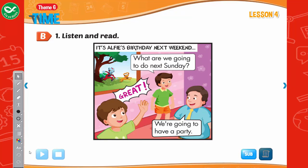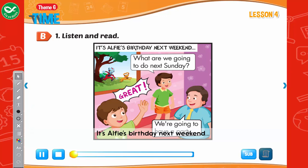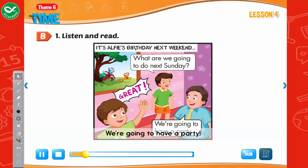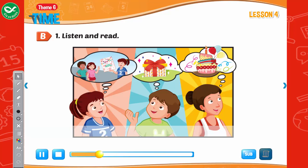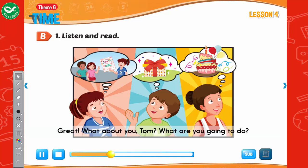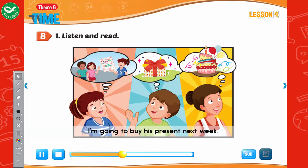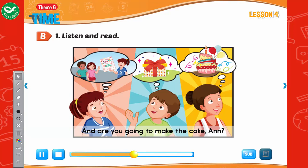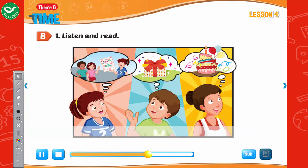Listen and read. It's Alfie's birthday next weekend. What are we going to do next Sunday? We're going to have a party. It's going to be great. What are you going to do, Lucy? I'm going to tell all of his friends tomorrow. What about you, Tom? I'm going to buy his present next week. And are you going to make the cake, Anne? Of course. I'm going to make his favorite strawberry cake next Saturday. It's going to be so much fun!